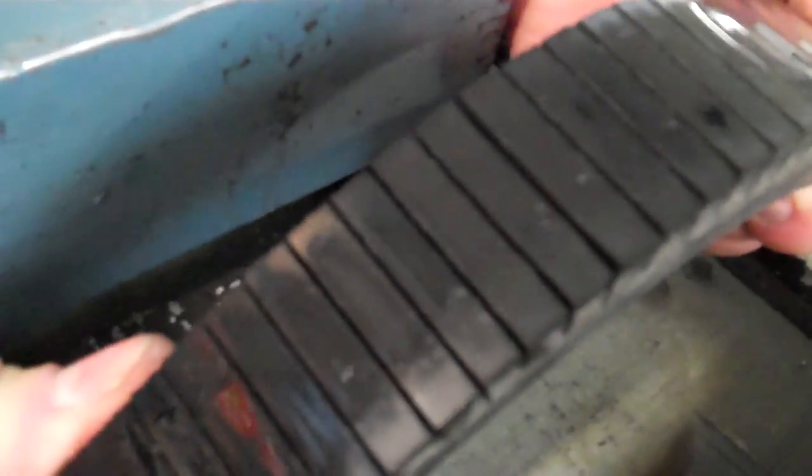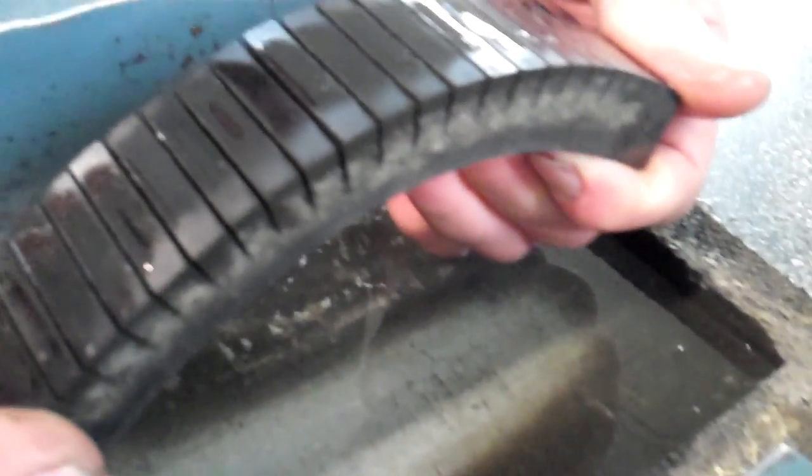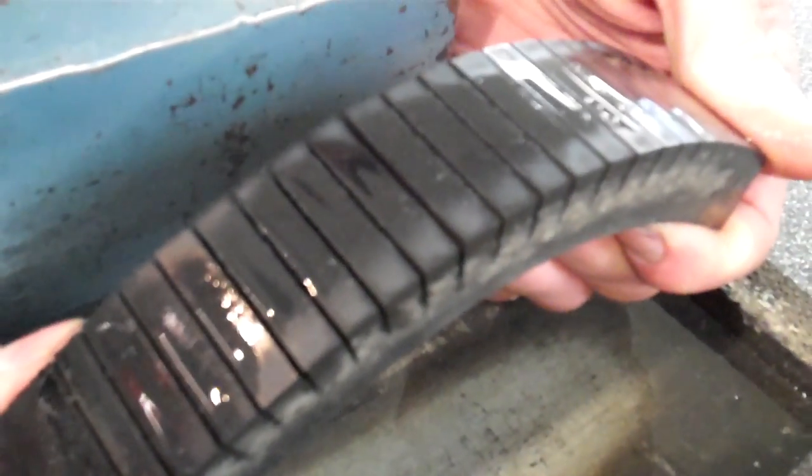Okay, so what we're looking at here is we have a hunk of rubber. It looks like some type of tire material, but it's been siped.